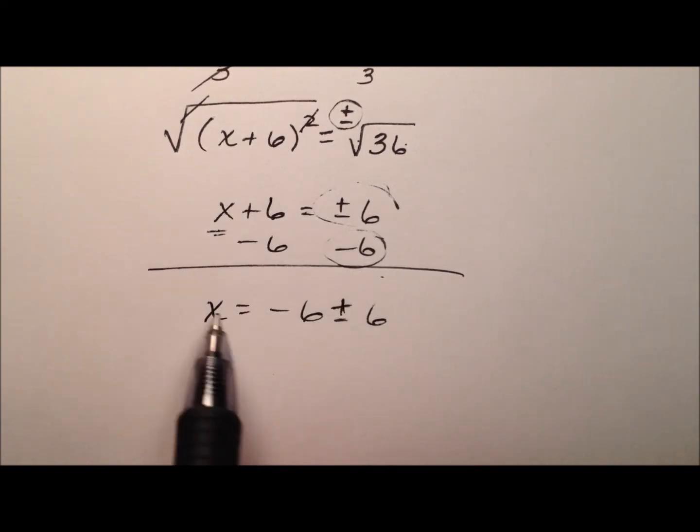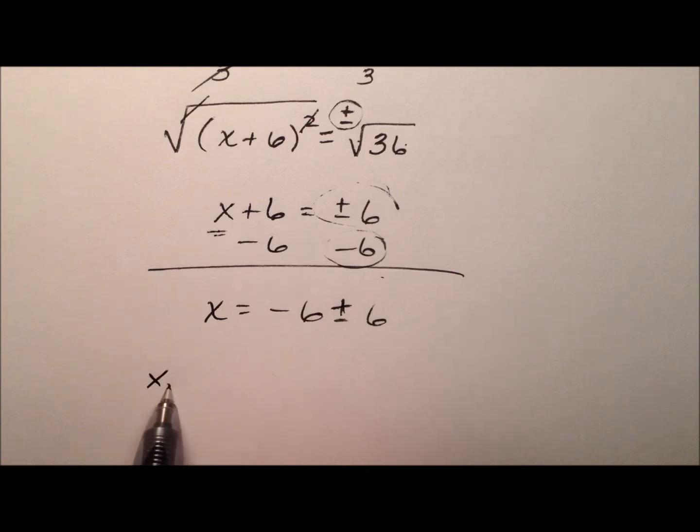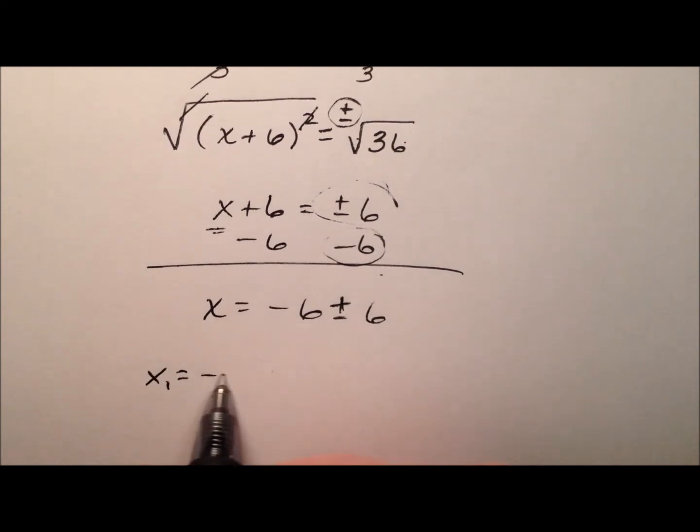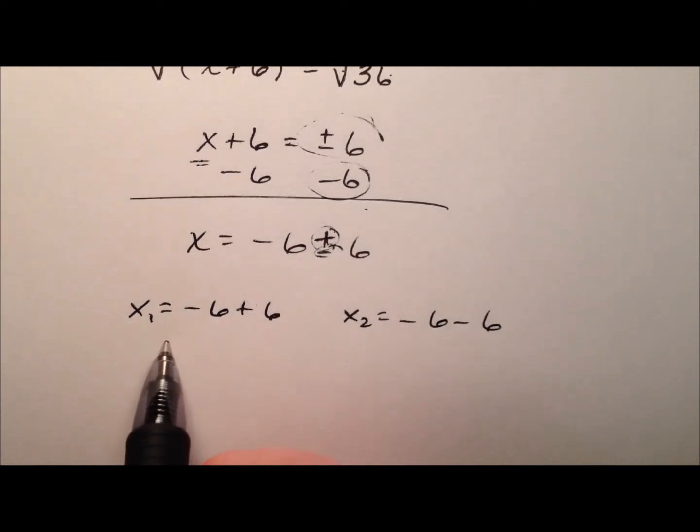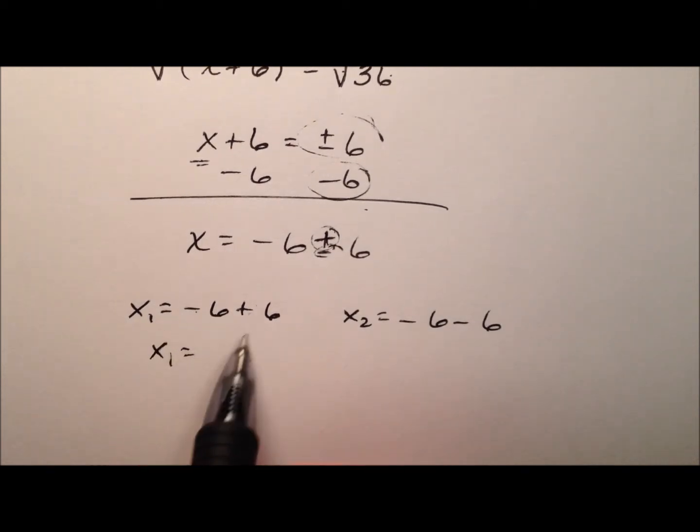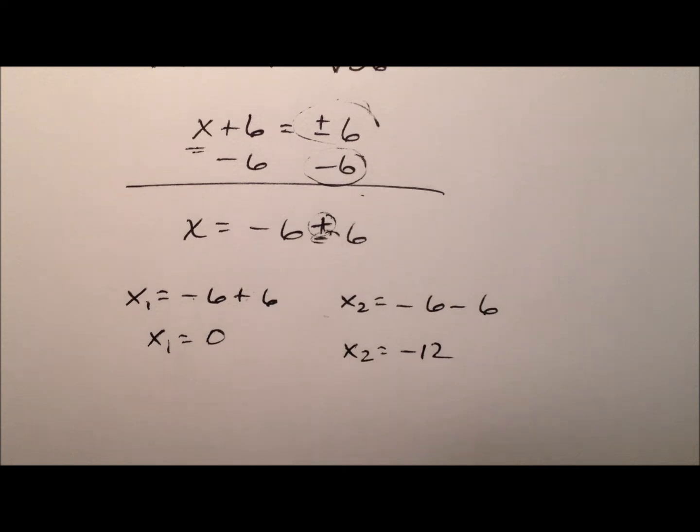Our first value of x is going to be negative 6 plus 6 from the plus. And our second value of x is going to be negative 6 minus 6 using the minus. The first one will be negative 6 plus 6 is 0. The second one is negative 6 minus 6, which is negative 12.